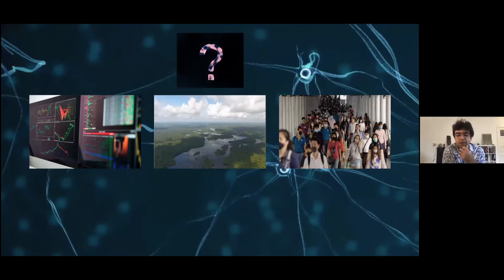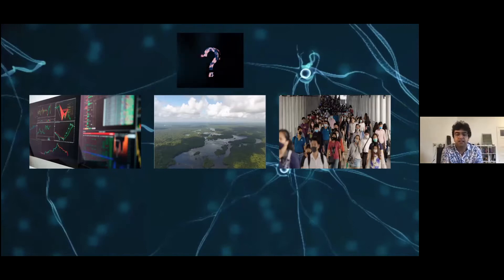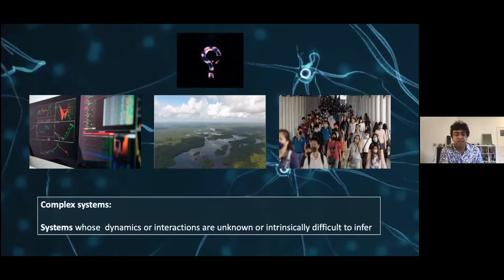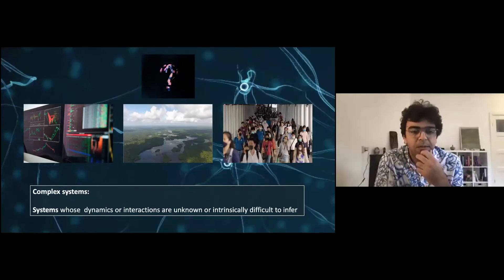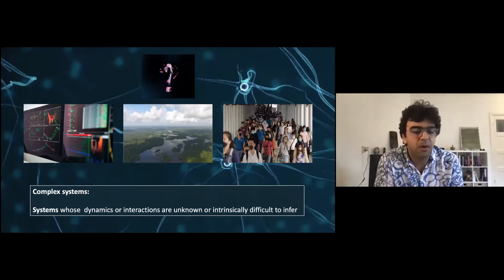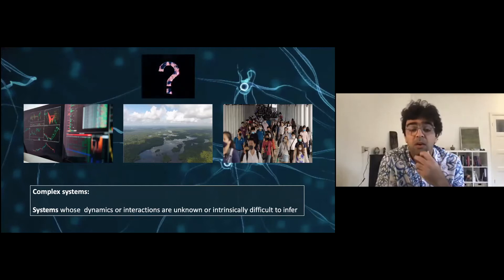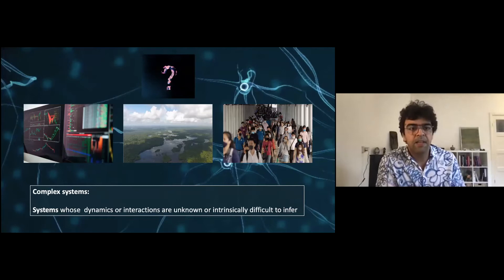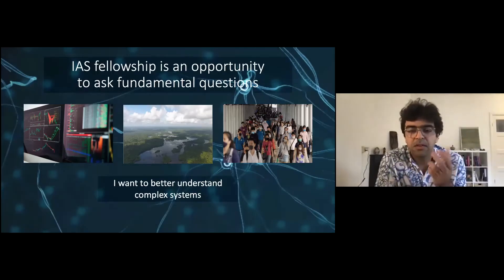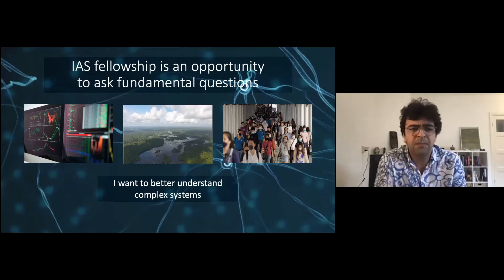Theoretical physicists have already solved lots of questions in science over the last 400–500 years, but I would say the most important questions in science nowadays are related to complex systems and require interdisciplinary research efforts. There are many ways to define complex systems, but the way appropriate for this talk — why we want to use topology, and why topology may be relevant — is that complex systems are systems whose dynamics we don't know and are very difficult to infer. This IAS fellowship is a great opportunity because it gives room for interdisciplinarity and the opportunity to ask fundamental questions.